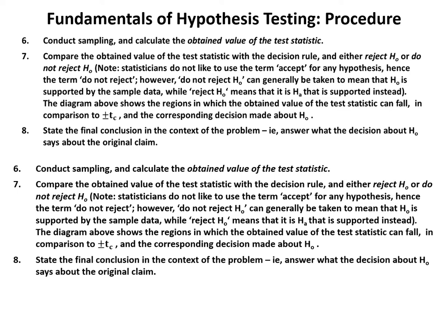The diagram shows the regions in which the obtained value of the test statistic can fall in comparison to the critical value ±tc, and the corresponding decision about H₀. Finally, step 8 is to state the final conclusion in the context of the problem — answering what the decision about H₀ says about the original claim in language that can be appreciated by someone who understands the context but may not be a statistics expert.